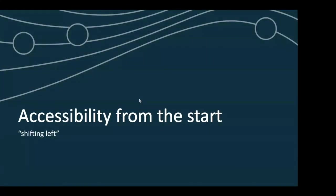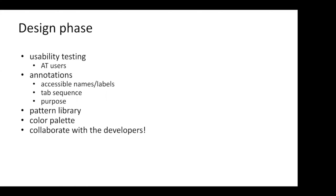Let's get started. Accessibility from the start — we call that shifting left at DQ. The idea is that accessibility should be incorporated even in the design phase. That involves usability testing with users with disabilities, which is a very common thing, but those users are often overlooked, so it's definitely a good idea to incorporate them to get that perspective.